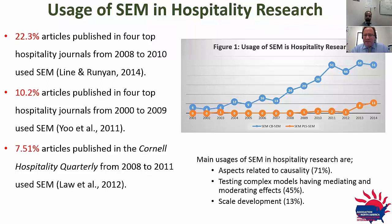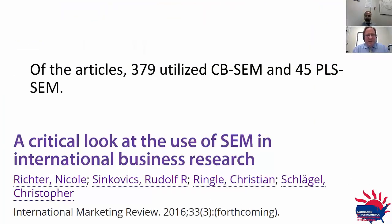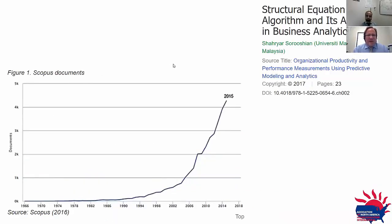Some of the main uses of SEM in hospitality research include testing causality, testing complex models with mediating and moderating effects — 45% of studies — and scale development at 13%. Another 2016 study in international business research found that covariance-based SEM was predominantly used: Sinkovics et al. found 379 studies used CB-based SEM compared to only 45 using PLS. But PLS usage is growing every single day.